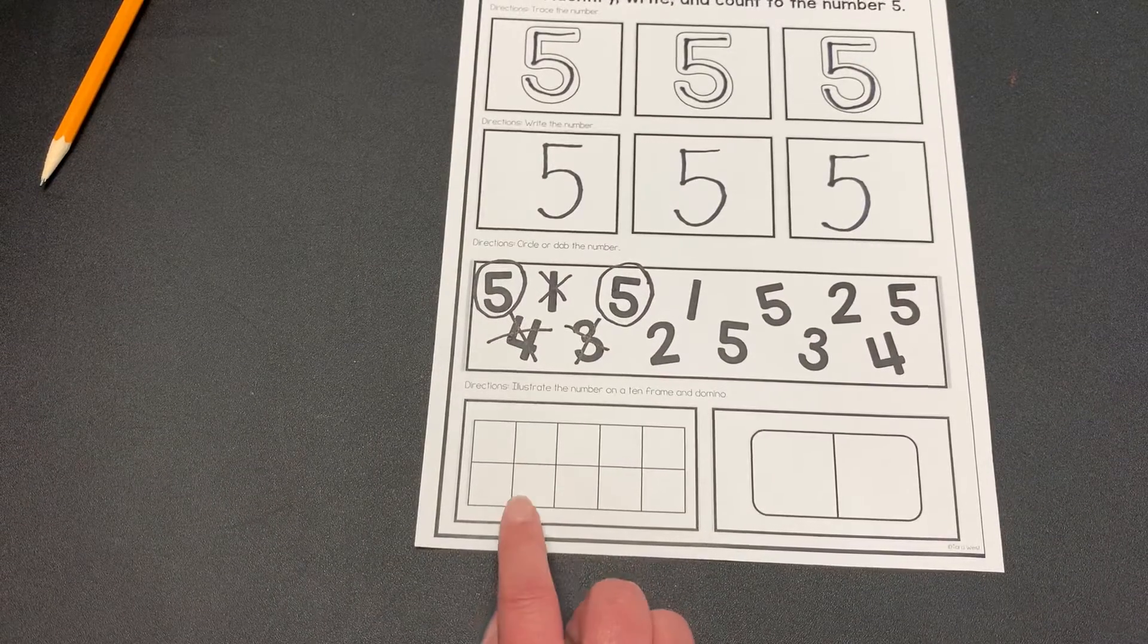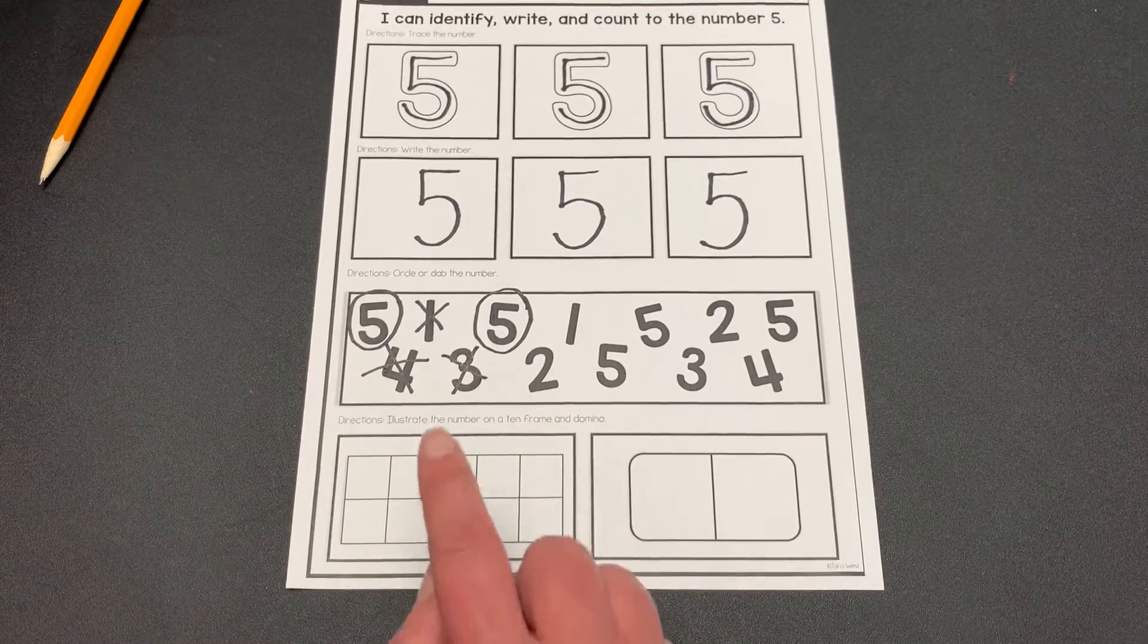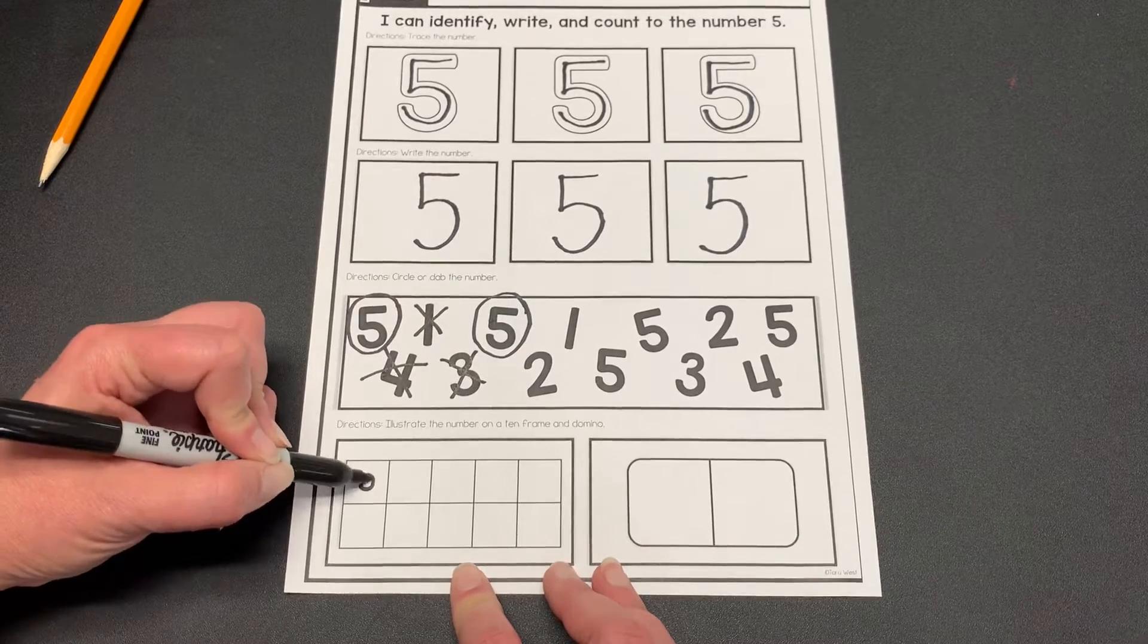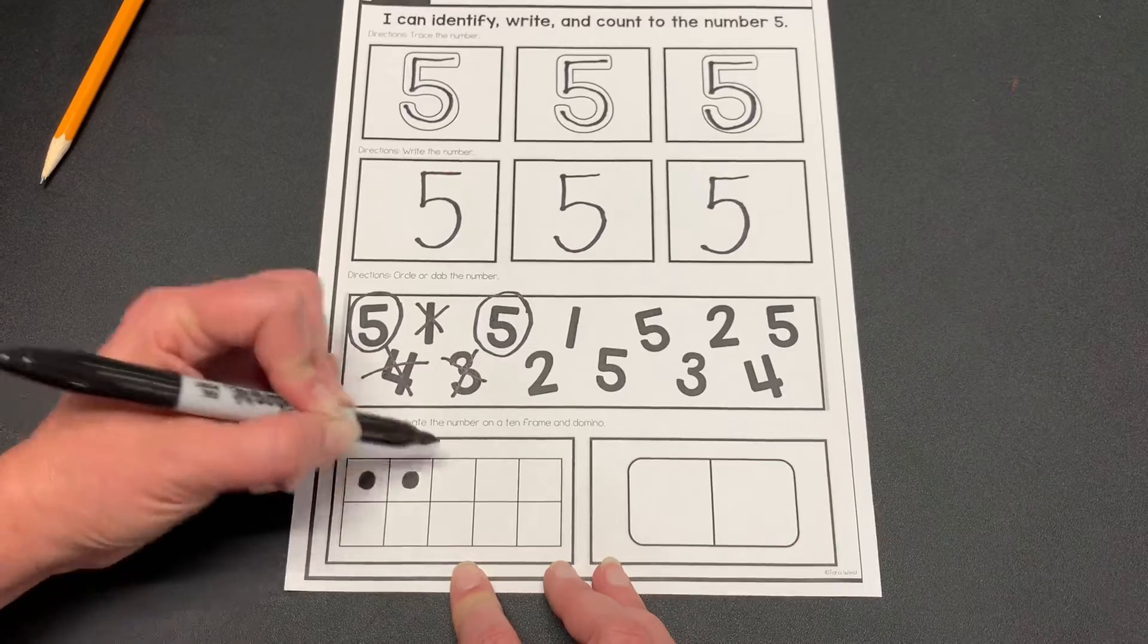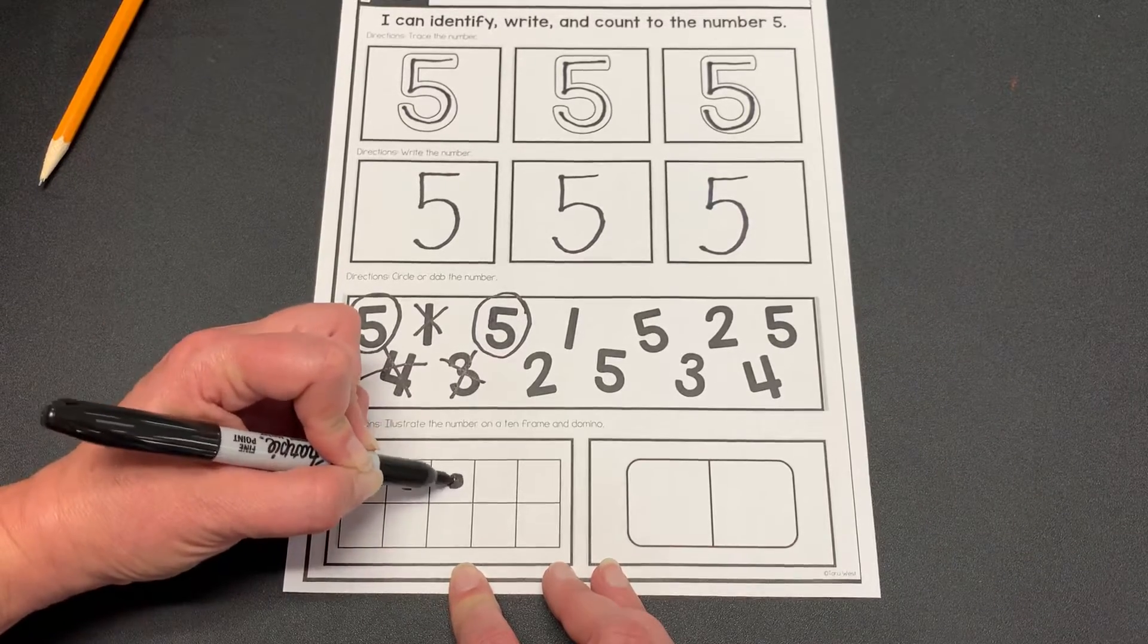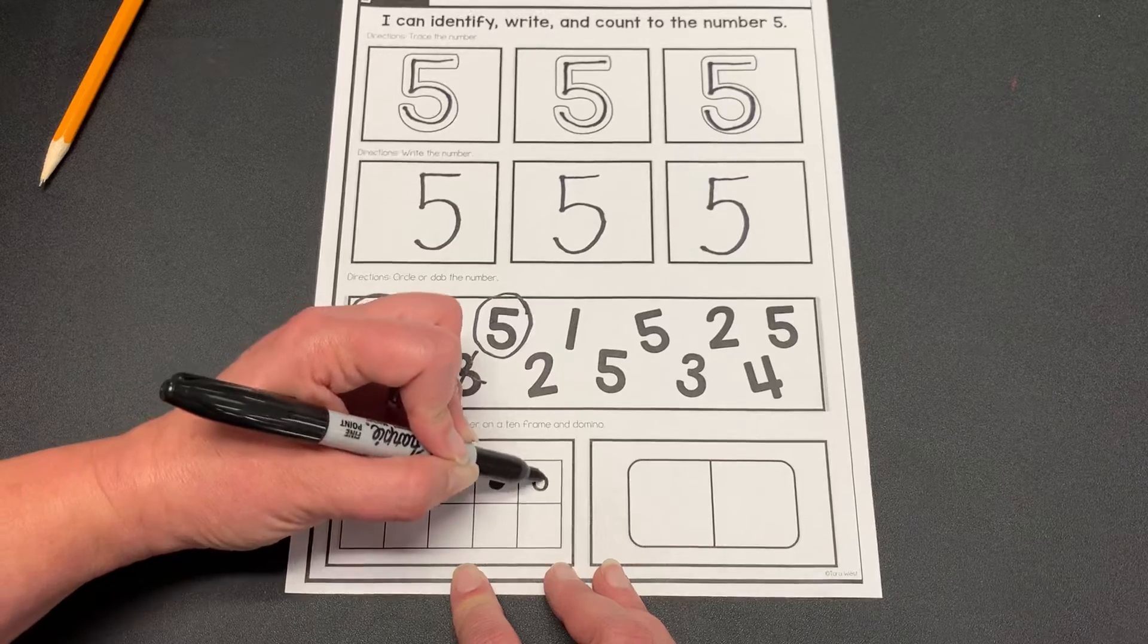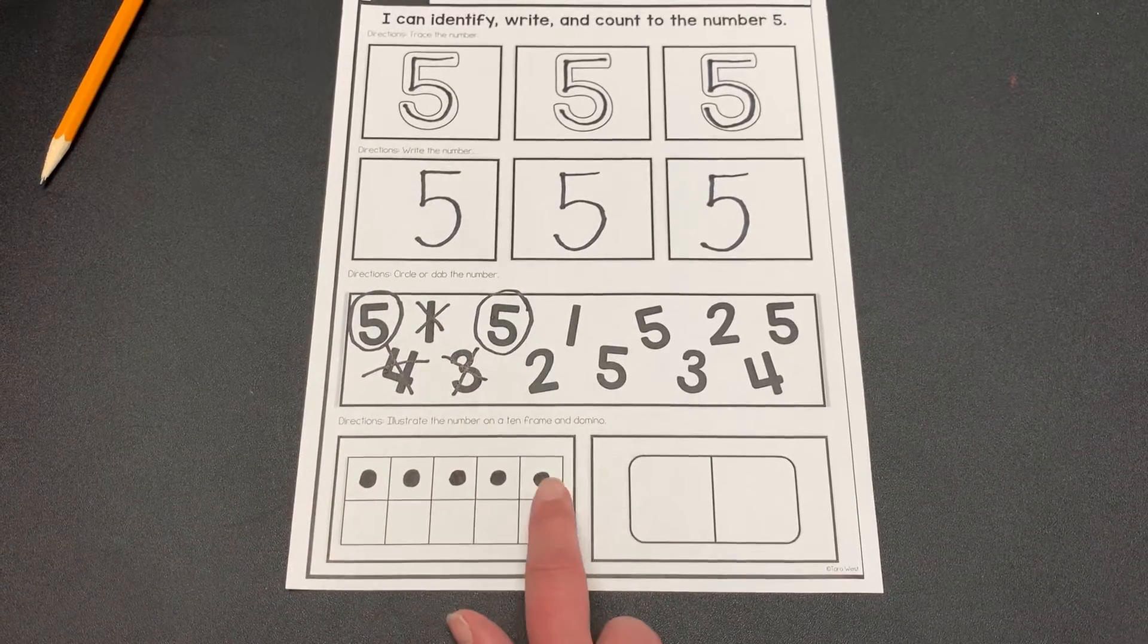Now down here, this is called a ten frame. So I'm going to write five dots in my ten frame. Let's count them. One, two, three, four, five. Five dots in my ten frame. Look at that. It fills up the whole first row.